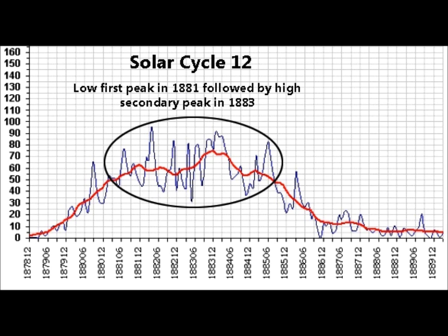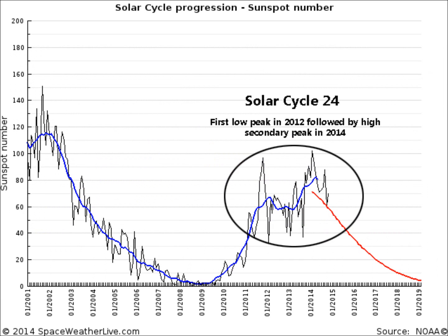If we look at solar cycle 24 in a little more detail, you'll notice 2012 is the initial lower peak and 2014 is now the high peak. It should start to drop off immediately, and then we are going to enter a cold era.